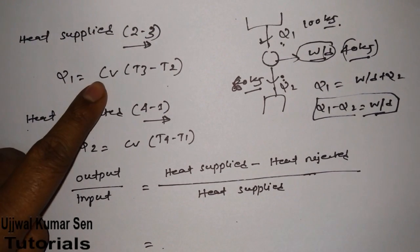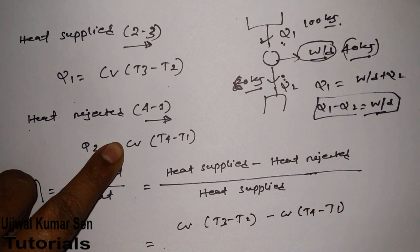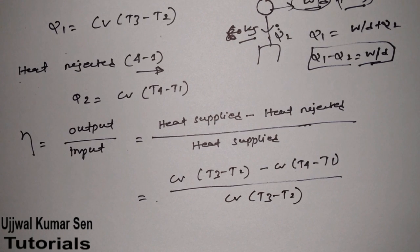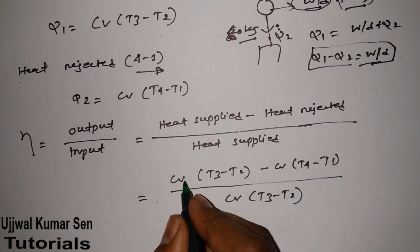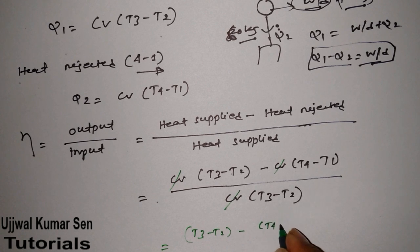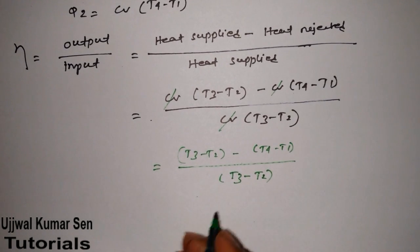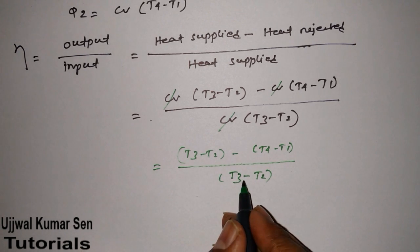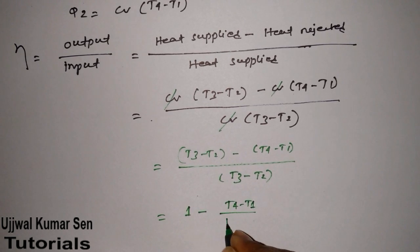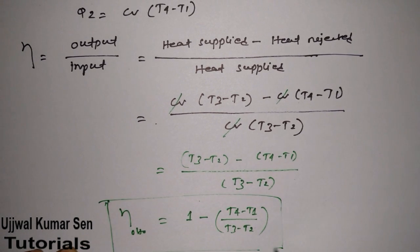Substituting: Q1 is Cv(T3 - T2) and Q2 is Cv(T4 - T1). So efficiency equals [Cv(T3 - T2) minus Cv(T4 - T1)] divided by Cv(T3 - T2). The Cv cancels throughout, giving: eta equals 1 minus (T4 - T1) divided by (T3 - T2). This is the efficiency of the Otto cycle.